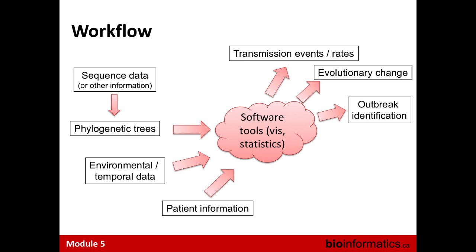To reprise all that data in a workflow: you usually get genomic data in the form of sequence information, which you have to analyze and transform into useful phylogenetic information. You'll have metadata or alternative sources of data — about the environment, time, and your patient — that need to match the information in your tree. You'll often put that into various different kinds of software tools. These tools can help you visualize the data or compute statistics to help you figure out transmission events, evolutionary changes, and even indicate outbreak events.